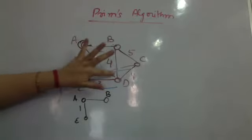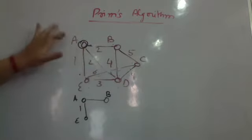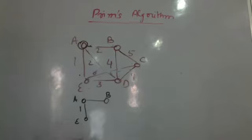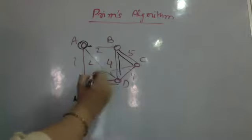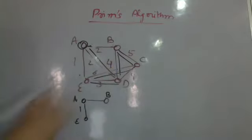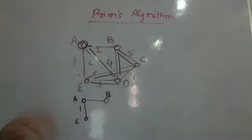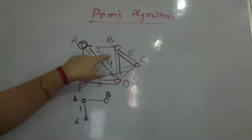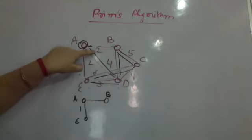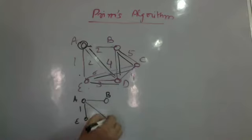Now I check all edges adjacent to the current tree covering nodes A, B, and E. There are now five possible edges with weights 3, 6, 2, 4, and 5. The minimum is 2, so I pick the edge with minimum weight and include it in my minimum spanning tree.